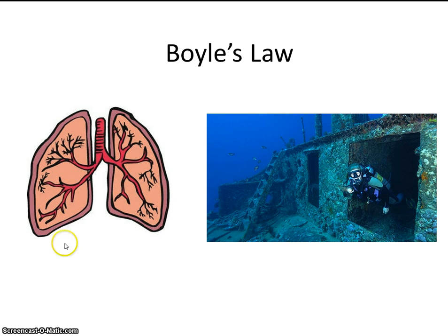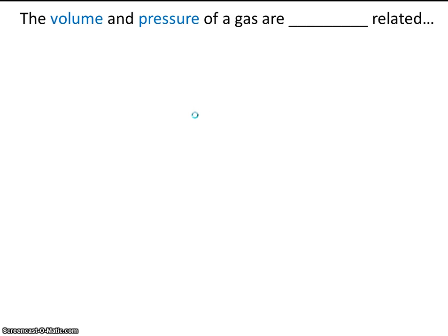So pressure and volume, that's Boyle's Law. The volume and pressure of a gas are inversely related. We just learned that when volume goes up, pressure goes down. That type of relationship, when one thing goes up and the other goes down, is called inverse.